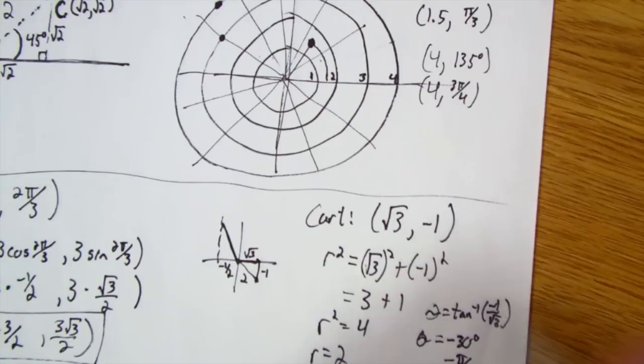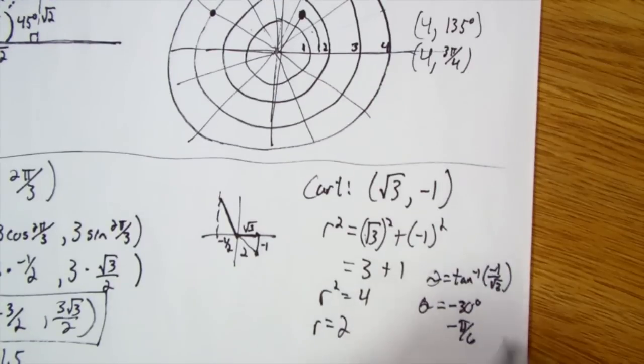But if our instruction said to keep it as a positive angle, then I would just have to make sure to add 2π to this. So go a full circle around. Negative π over 6 is the same stopping position as 11π over 6. If they don't tell you that it has to be a positive angle, it's okay to leave it as 2 comma negative π over 6. That's completely fine. Hopefully that was a good enough tutorial for you. If you have any extra questions, let me know and I'll try to answer them.